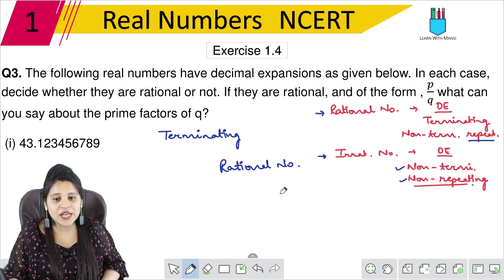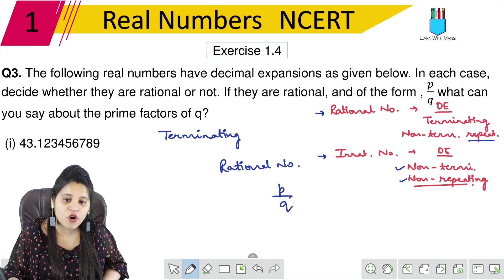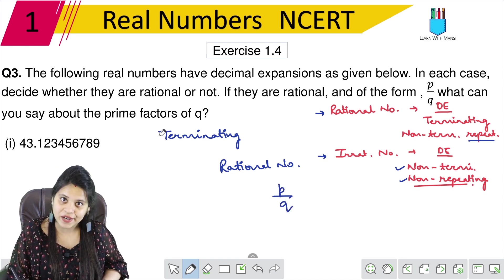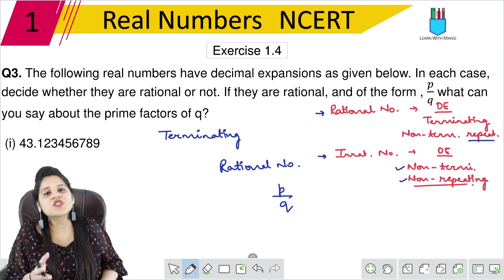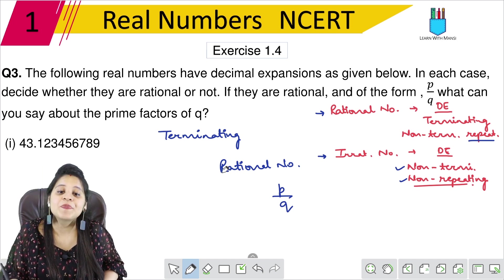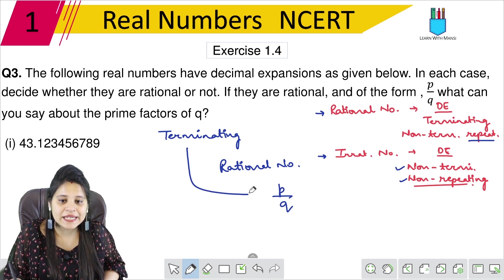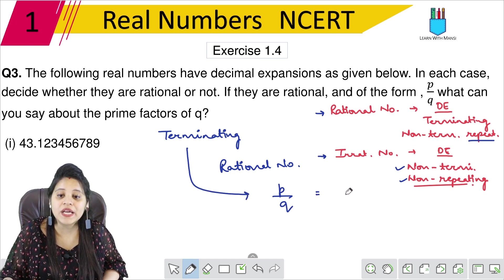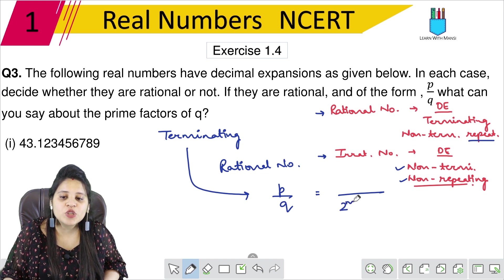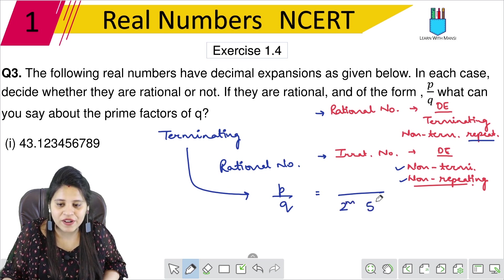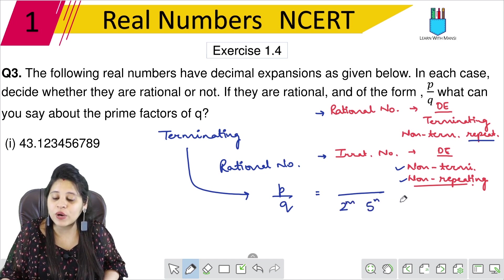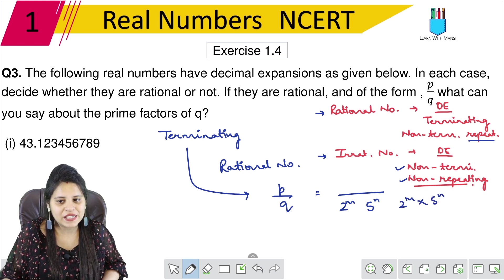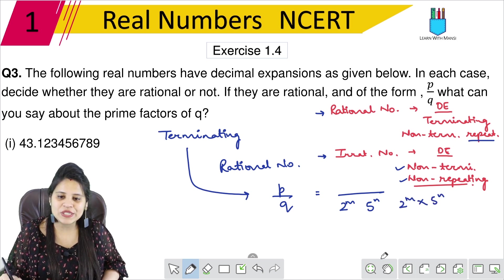Also, if it is rational number P upon Q, then what will you say about Q and prime factors? The terminating which has Q, which has a denominator, is either 2 raised to the power m, or 5 raised to the power n, or 2^m into 5^n.